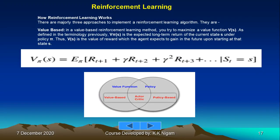There are three main approaches to implementing a reinforcement learning algorithm. In a value-based approach, you try to maximize a value function V(s). V_π(s) is the expected long-term return of the current state s under policy π, so V(s) represents the reward the agent expects to gain in the future upon starting at that state.